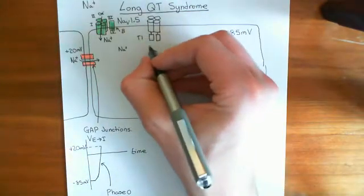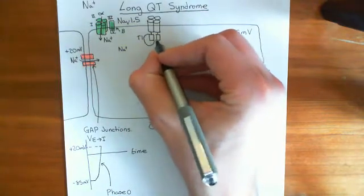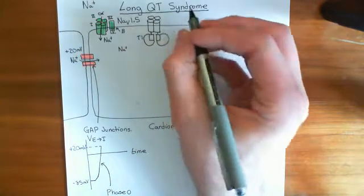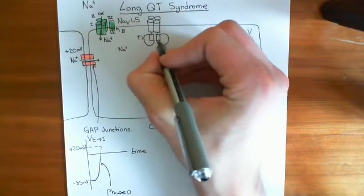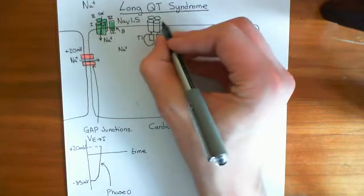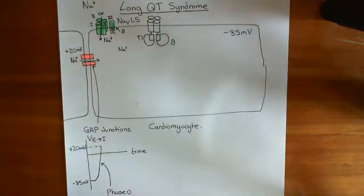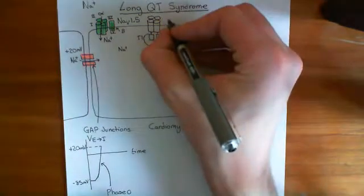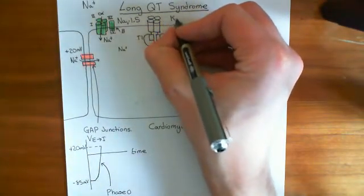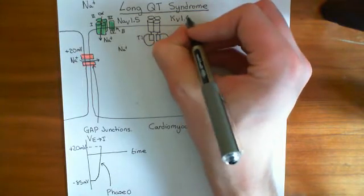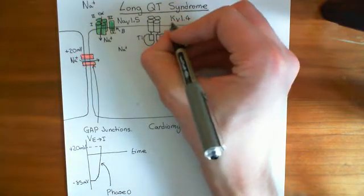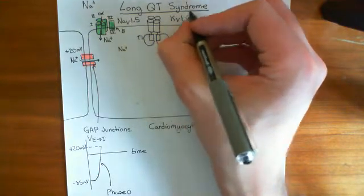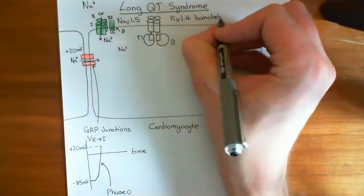You can also have beta subunits bound to these tetramerization domains. The four subunits that make up the pore-forming unit are known as alpha subunits, and the subunits on the intracellular side are known as beta subunits. There are two types of voltage-gated potassium channels opening at this stage: one is made up of a homotetramer of KV1.4 subunits, meaning all four alpha subunits are synthesized from the KV1.4 gene.